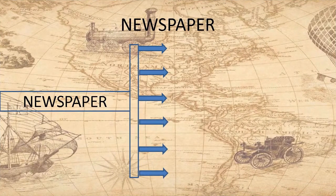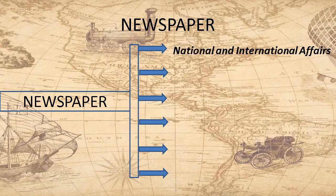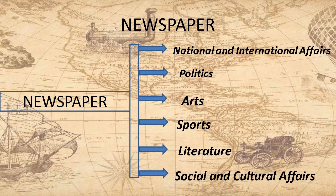Children, let us understand the first form of the written sources, that is, newspapers. Just as newspapers are considered the fourth pillar of democracy in the modern period — the remaining three pillars of democracy are legislature, executive, and judiciary — they are also a major medium of information. Through newspapers, we can get information about national and international affairs, politics, arts, sports, literature, and social and cultural affairs.